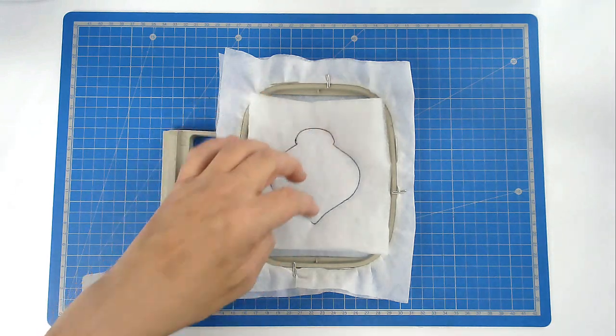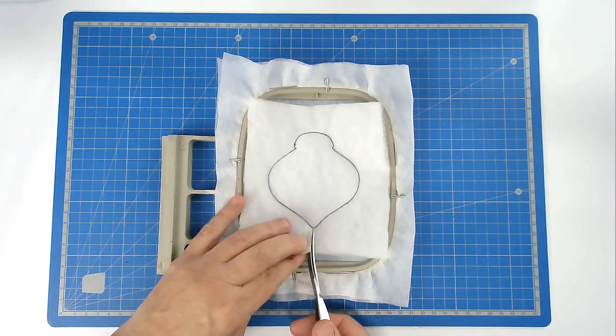Trim away the excess batting from around the edge of the stitch line, taking care not to cut your stitches of course.